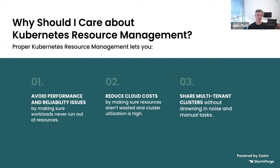The second problem is cloud costs. If developers are picking resources that are way too high, the application will be reliable but extremely expensive. Datadog did a survey a few years ago and found that in most Kubernetes clusters, resource utilization is only 30%, so people are paying two or three times more than they need to. This is an extremely common problem.